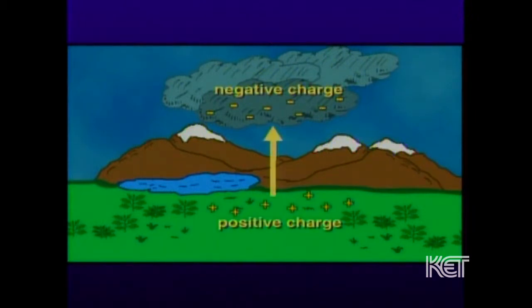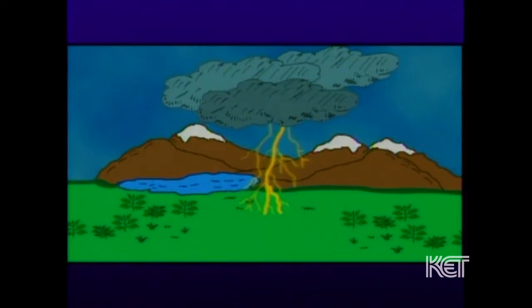Then you have moving charges, which is really the electricity that we tend to think of as powering things and accomplishing things — like sending signals to our muscles and making them contract, or lightning, where you build up a static charge between a cloud and the earth and then that current flows all of a sudden. That's the moving charge of an electrical current from the ground up.